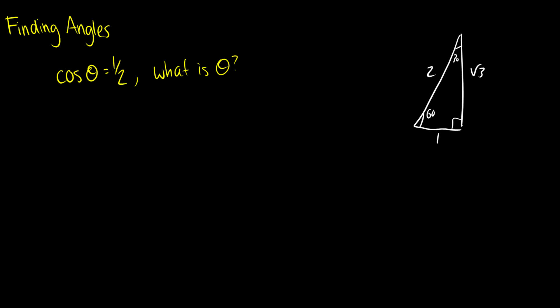So cosine of theta, where can I get 1 half? Well if I take 60 degrees I get adjacent over hypotenuse is equal to 1 half, so this is going to be cosine of 60 degrees. Now this is not the only answer.